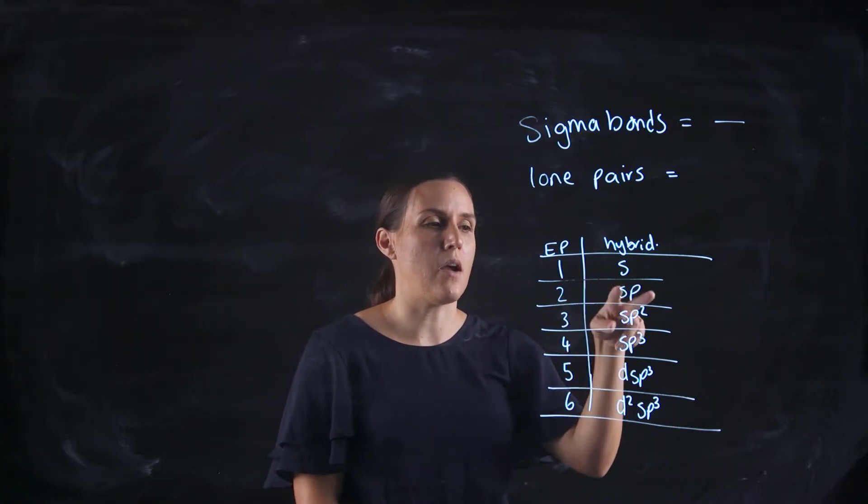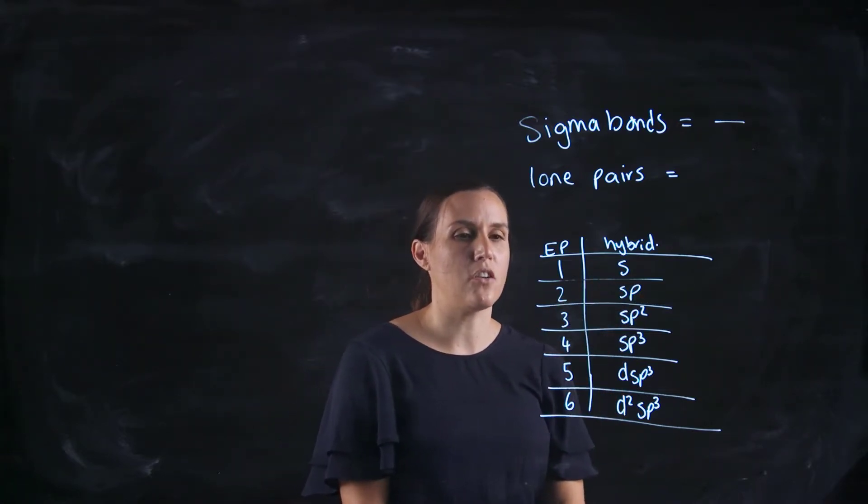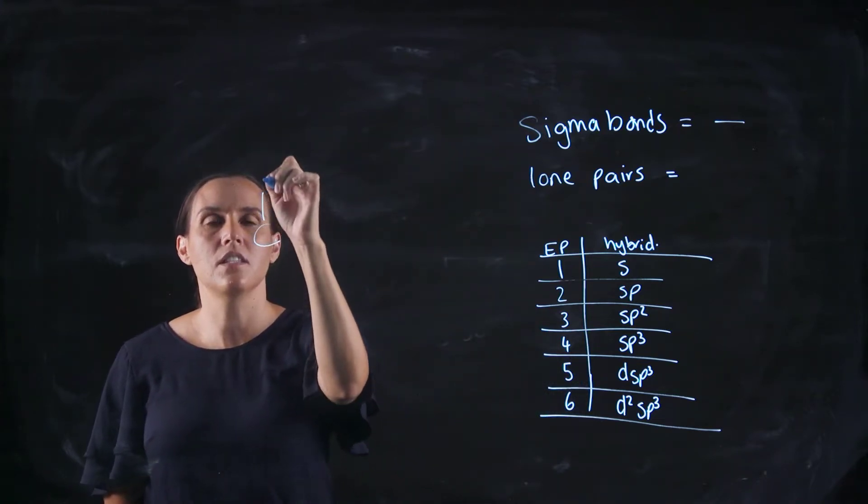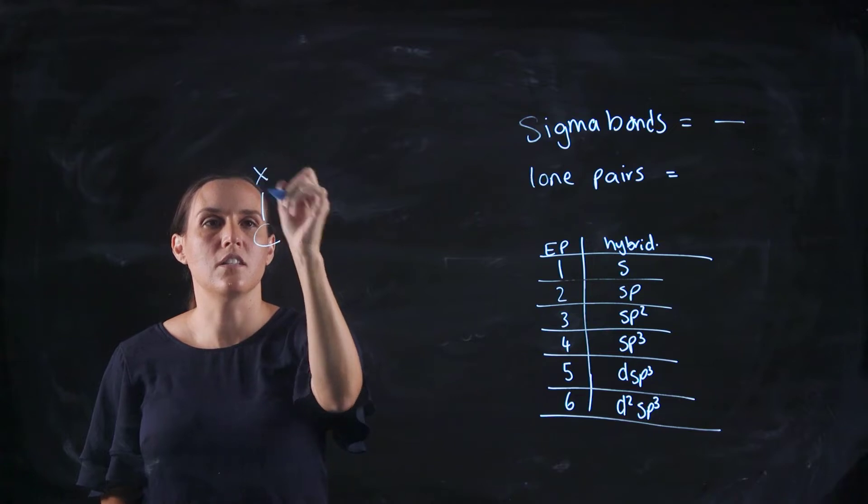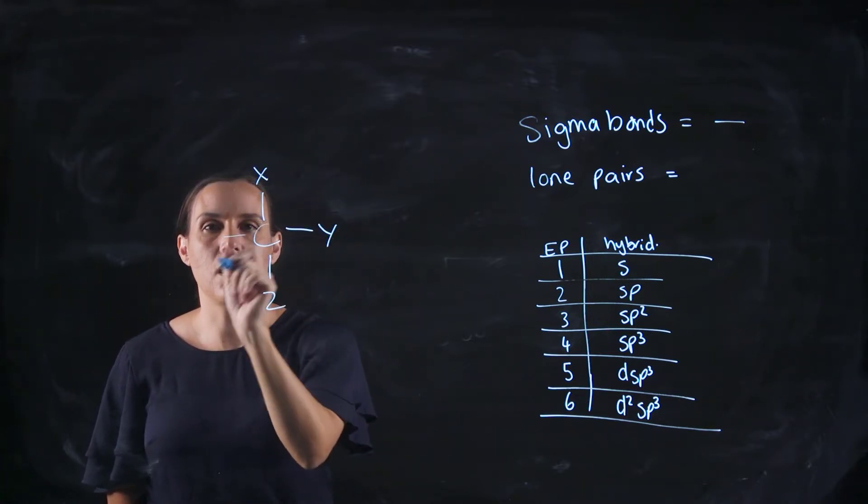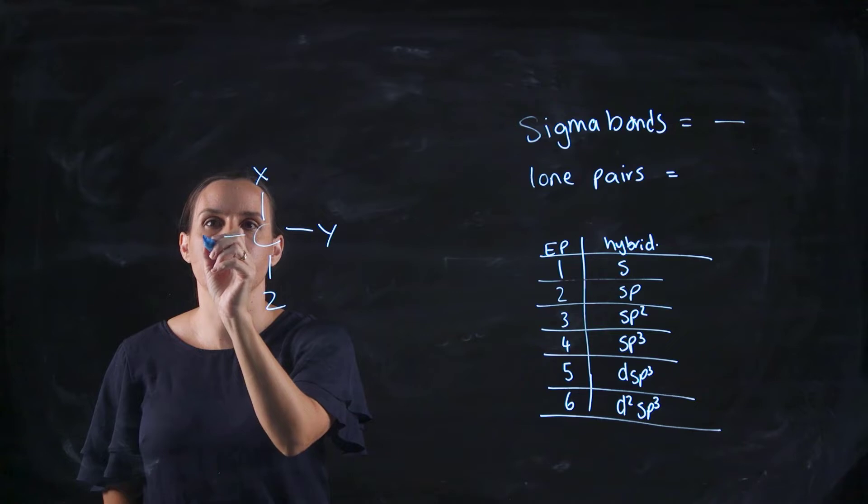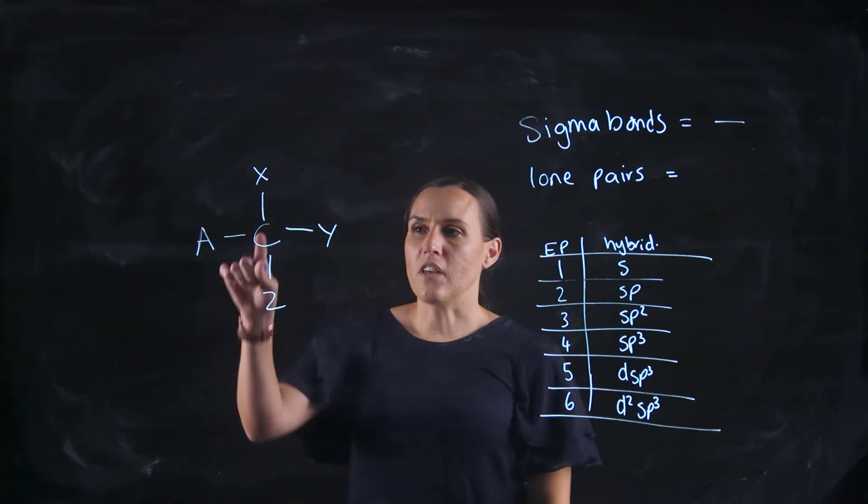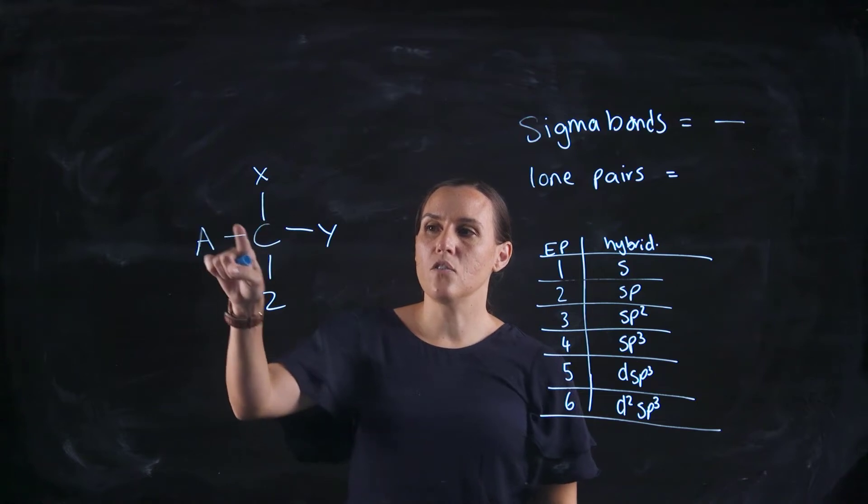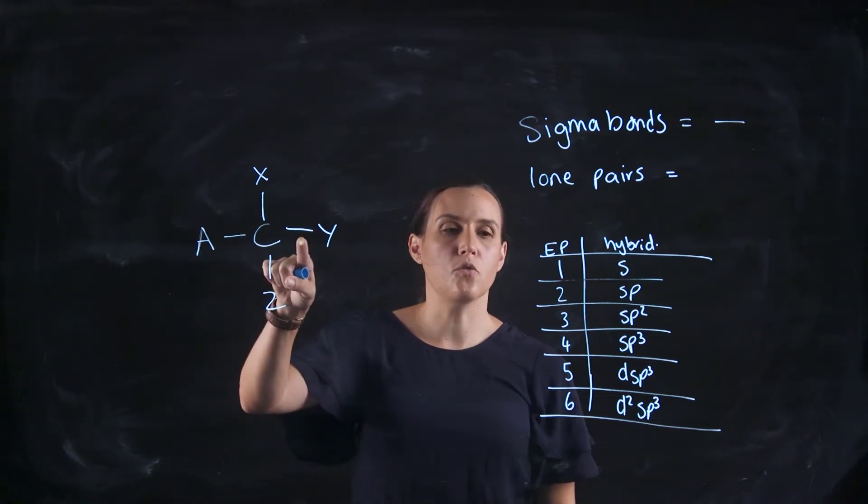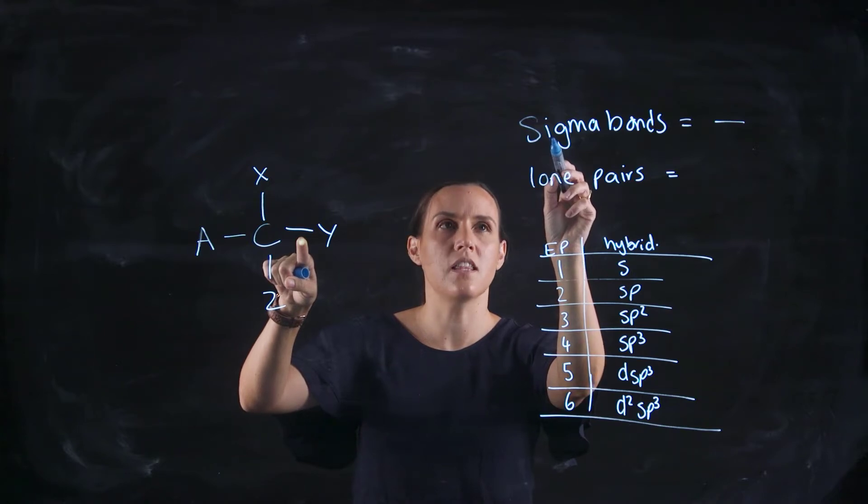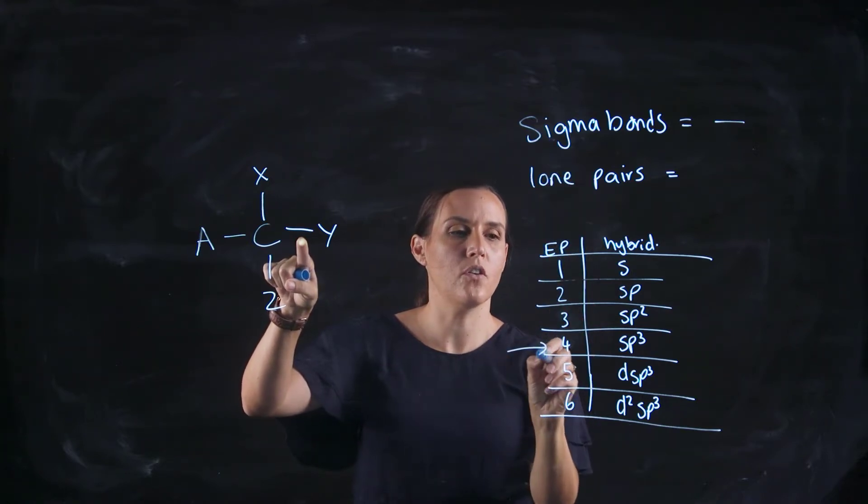So let's look at an example where we have carbon single bonded to, let's just call them X, Y, Z, and A. So I've got carbon that's got 1, 2, 3, 4 single bonds or sigma bonds. They're effective pairs, so I've got 4, so that would be an sp3 hybridized structure.